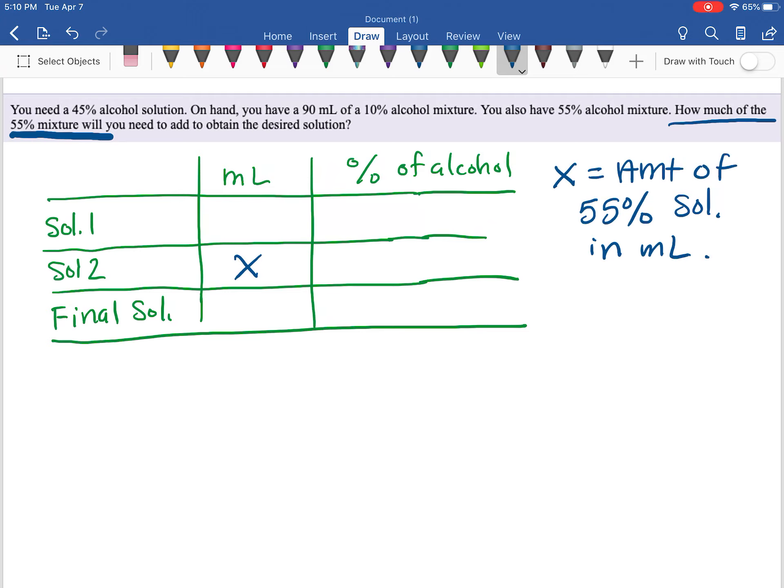Now if we read the problem again, it says for the first solution we have 90 milliliters and that is 10% alcohol.